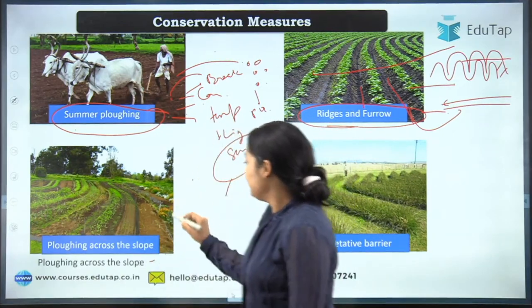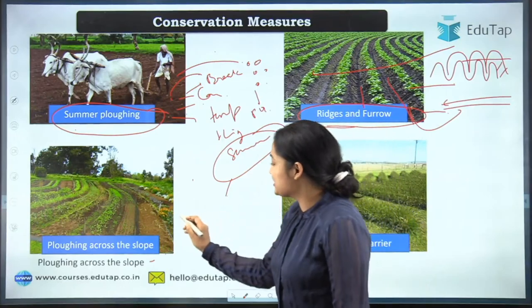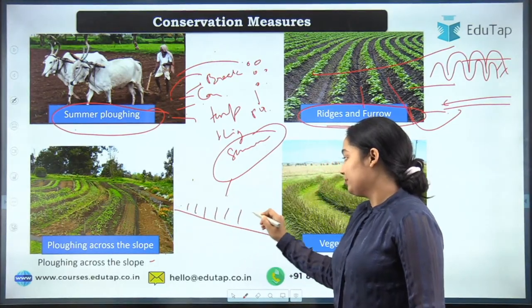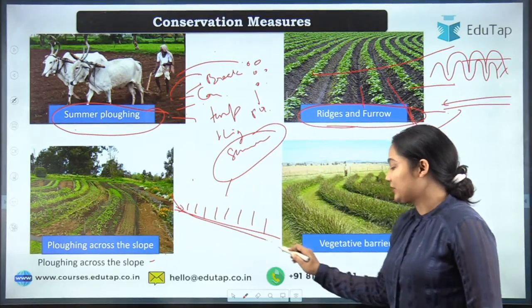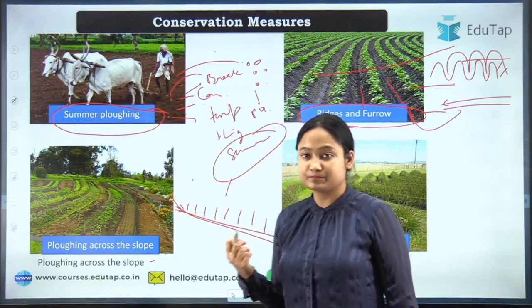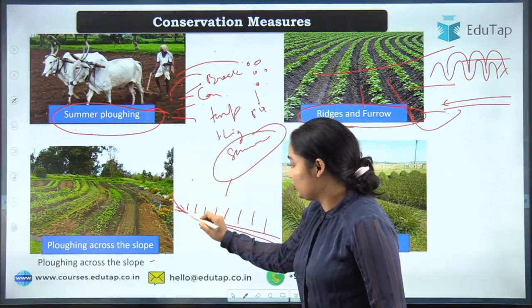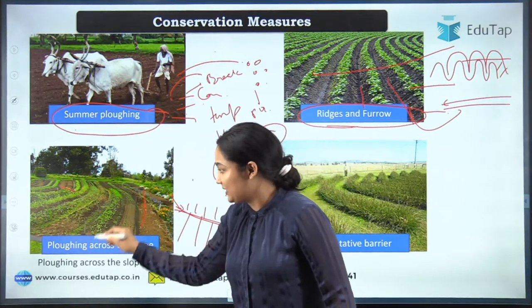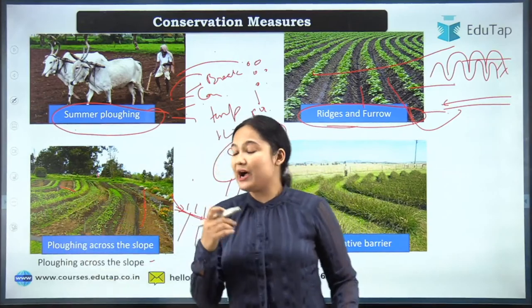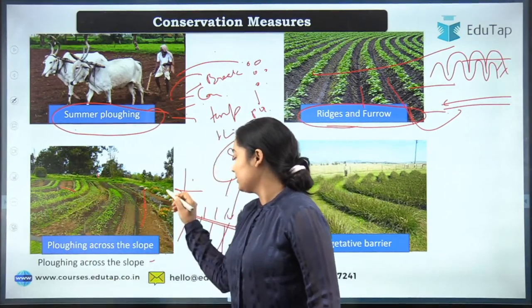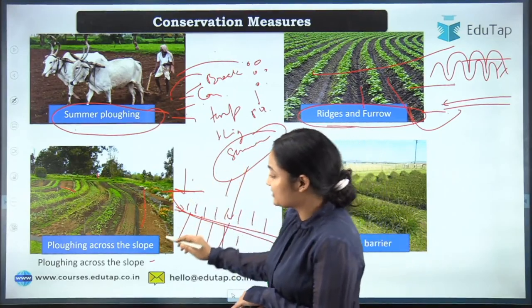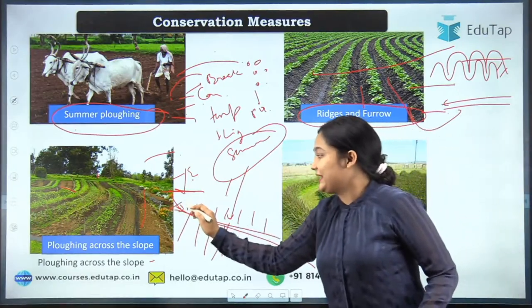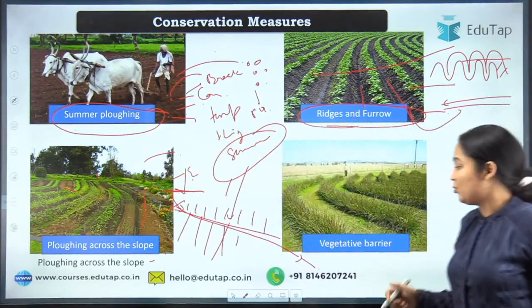Plowing across the slope: if your land has a slope of one to three percent, and you plant or irrigate along the slope, water will easily slide out due to gravity. Instead, you do agriculture perpendicular to the slope. Water gets more time to be absorbed and the crop rows act as a barrier-like structure, hindering the movement of water.